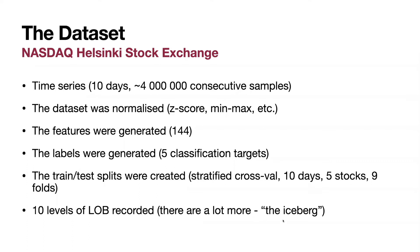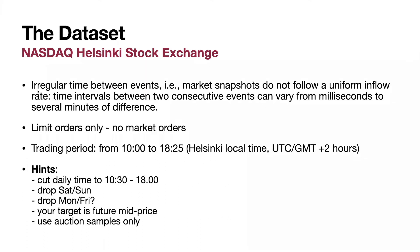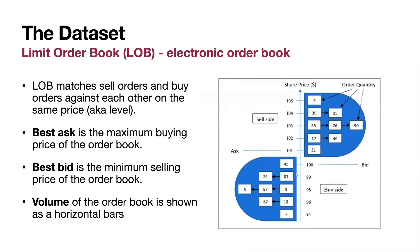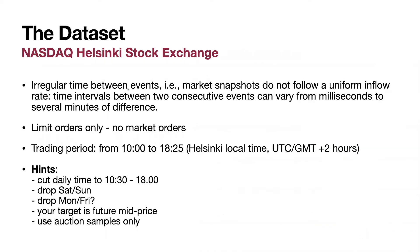There are 10 levels of the limit order book recorded — five levels of buys and five levels of asks — although there are many more on each side. This vast amount of data is called the iceberg. The time between events is irregular, meaning the states of snapshots delivered to you have some unconstrained time delta between them, which is not known in advance.